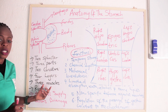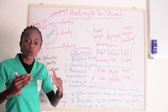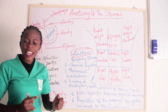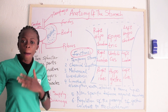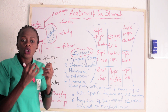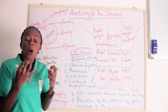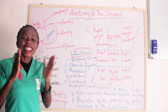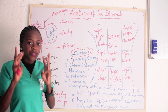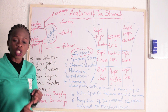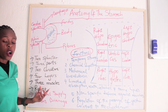The muscularis layer of the stomach is made up of three different types of muscles. We have the longitudinal muscles, the circular muscles, and the oblique muscles. These muscles enable the food to be churned properly — they help in mechanical breakdown of food and also in peristalsis. So the muscularis layer of the stomach is very important.